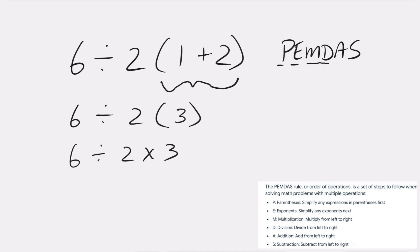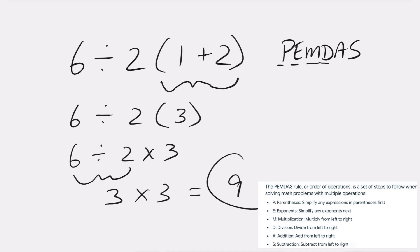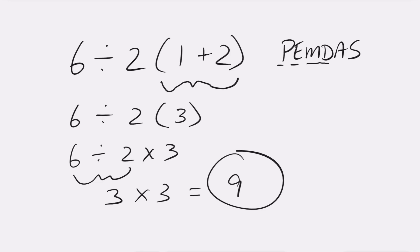6 divided by 2, from left to right, gives us 3. That 3 is then multiplied by the remaining 3, which gives us 3 times 3, or 9, for our answer.